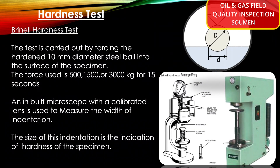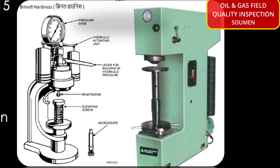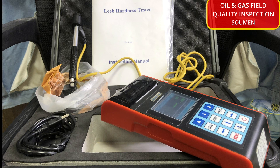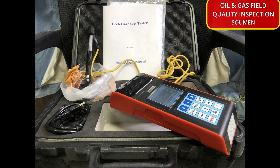The Brinell hardness test is carried out by pressing a hardened 10 mm diameter steel ball into the surface of the specimen. The force used is 500, 1500, or 3000 kg for 15 seconds. A built-in microscope with a calibrated lens is used to measure the width of the indentation. Nowadays, portable pin-type hardness testing machines are also available, generally used for measuring hardness especially in the case of second-time weld repairs, though they are less accurate than the larger machines.